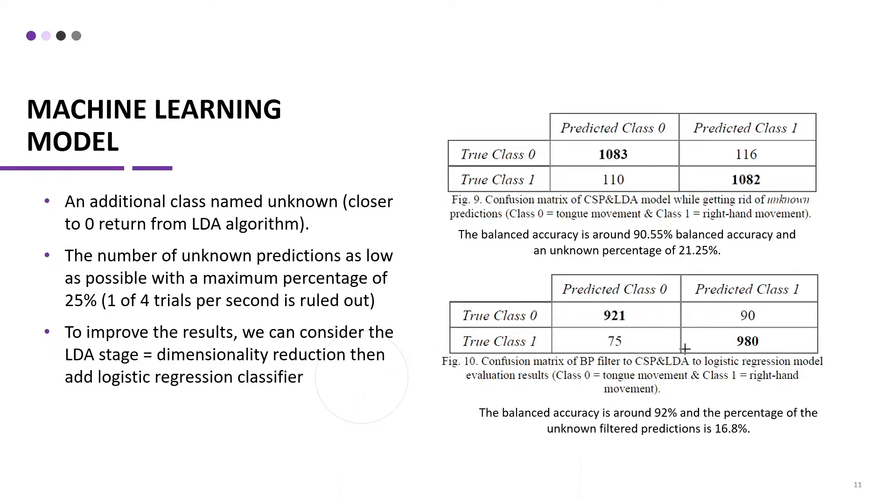Later on, in order to improve the results, and since this application is aimed for real-time analysis, a different technique of classification is introduced, where we have another class named unknown, where non-definitive classifications fall under. The percentage is kept as 25% as a maximum, since the model can perform 4 classifications per second. If we have a maximum percentage of unknowns limited to 25%, meaning that we can rule 1 trial out of 4 per second. Doing that increased our percentage to 90.55%, with an unknown percentage kept under 21.3%.